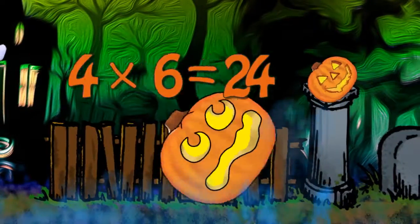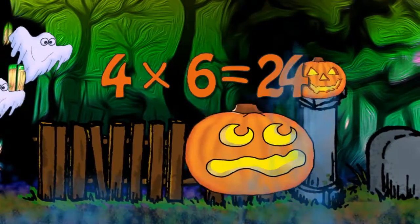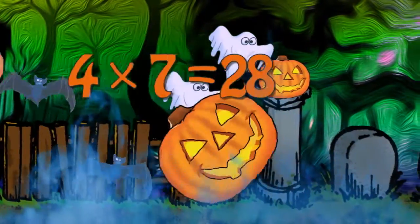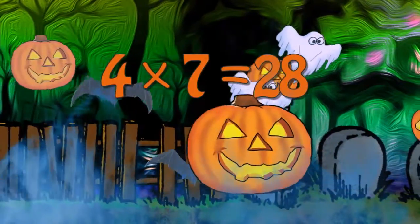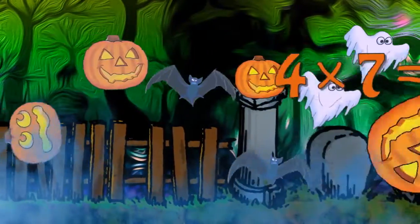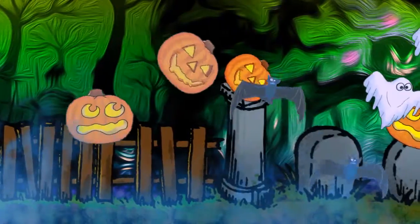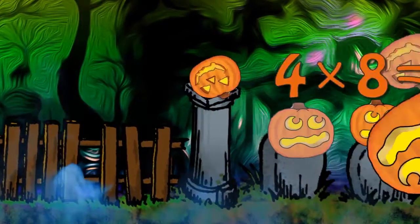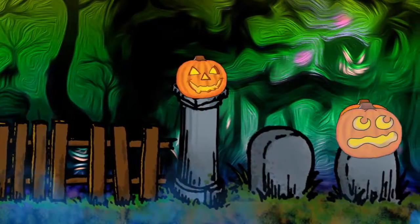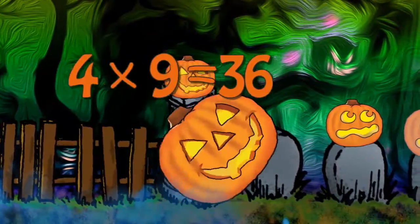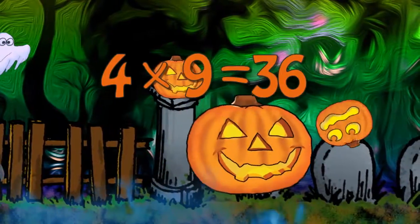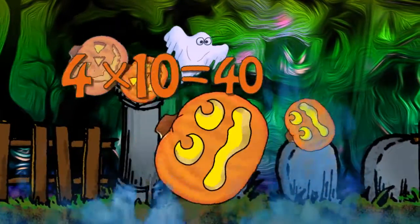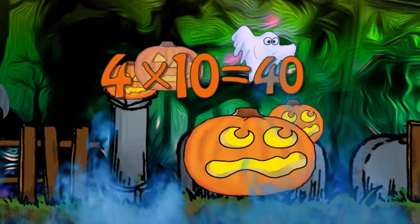Four times six is twenty-four. Four times seven is twenty-eight. Four times eight is thirty-two. Four times nine is thirty-six. Four times ten is forty.